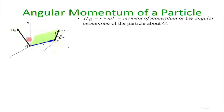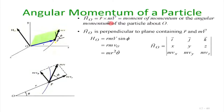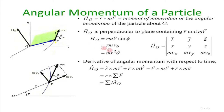The angular momentum about O is H_O = r × l, where l = mv is the linear momentum. The direction of H_O is perpendicular to the plane containing r and mv, determined by the cross-product rule. The magnitude is |r||mv|·sinφ, where φ is the angle between r and mv. The quantity v·sinφ is the component of velocity perpendicular to r.